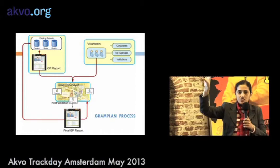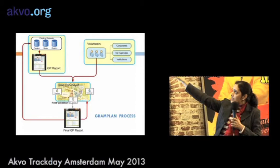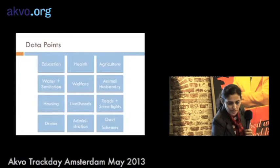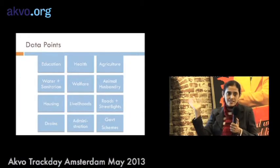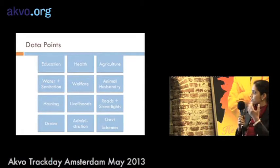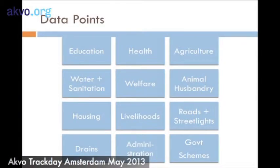So the high-level idea is: GP reports generated from existing secondary data are taken through volunteers to the local village level, validated and updated there. The reports go back to the Gram Panchayat — who now have a relevant, comprehensive report — and the data goes back to the state for update. The report covers everything relevant to a local government: education, health, welfare schemes, housing, roads. Indian local governments are supposed to manage 29 functions, and these are the key ones.